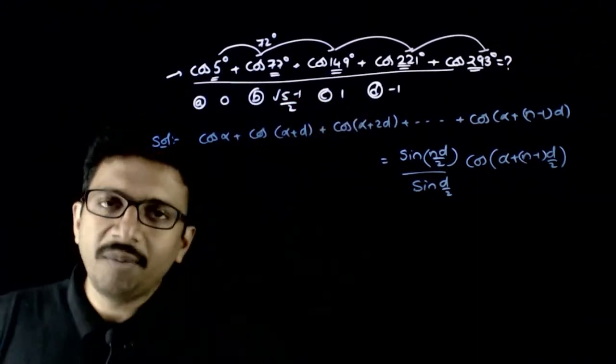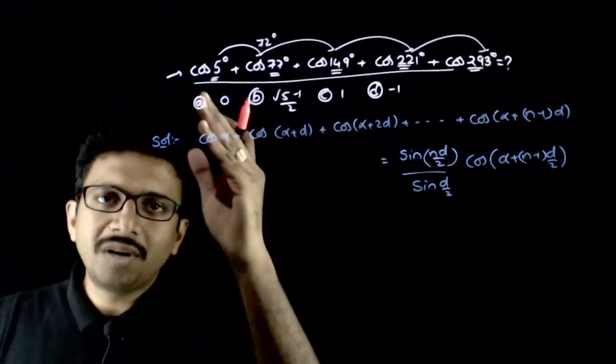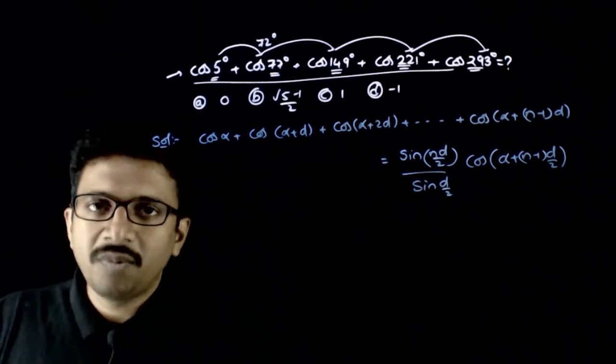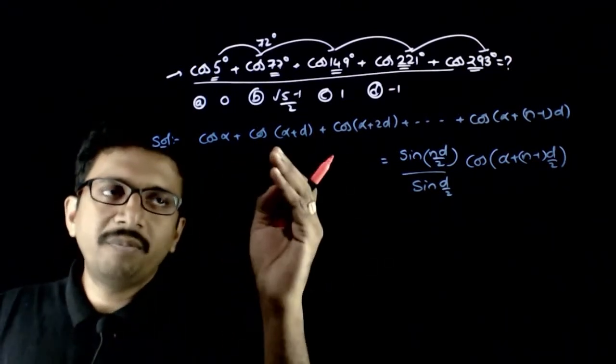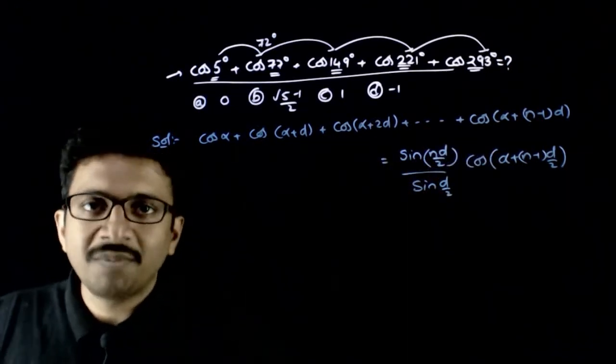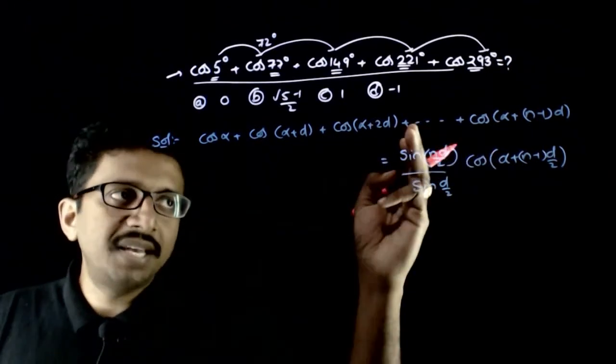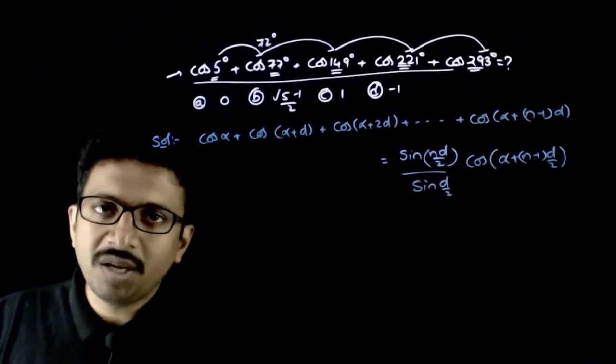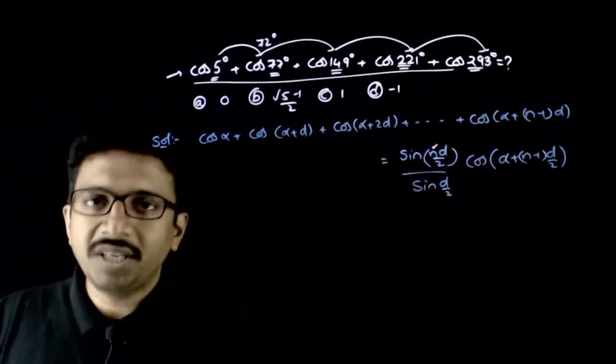If the angles are in AP and you want the sum of the cosines of those angles, you have a standard formula: cos alpha plus cos(alpha plus d) plus cos(alpha plus 2d) and so on up to cos(alpha plus (n-1)d) equals sin(nd/2) by sin(d/2) times cos(alpha plus (n-1)d/2), where n is the number of terms.